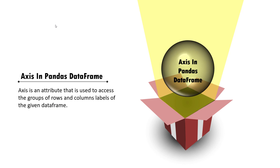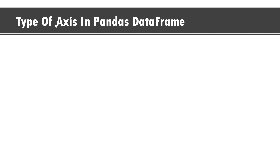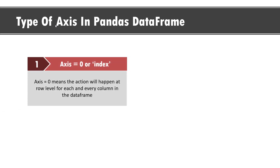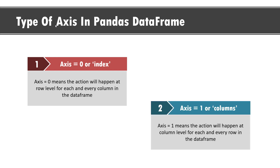It is an attribute that is used to access the group of rows and column labels of the given DataFrame. There are two types of axis in Pandas DataFrame. When you mention axis is equal to zero or index in any method of Pandas DataFrame, it means the action will happen at row level for each and every column in the DataFrame. Whereas when you mention axis is equal to one or columns, it means the action will happen at column level for each and every row in the DataFrame.